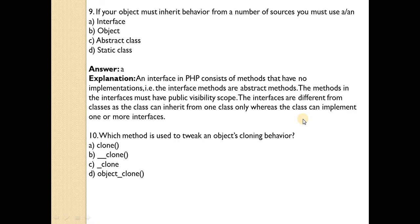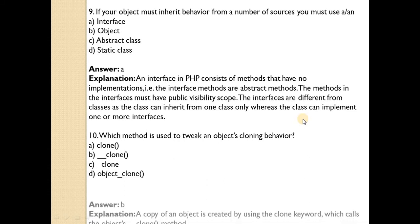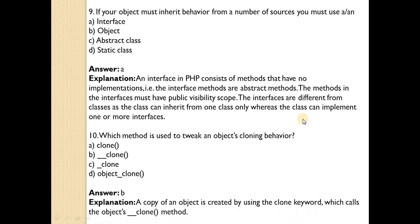Which method is used to tweak an object's cloning behavior? Answer is B — the double underscore clone (__clone) method is used.